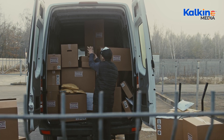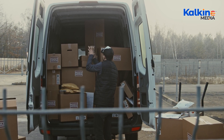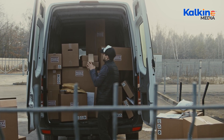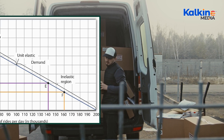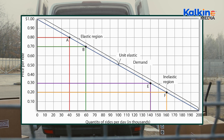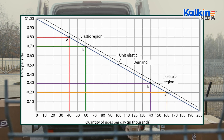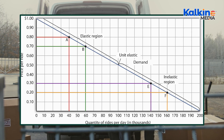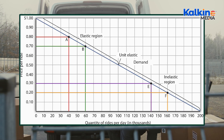The demand curve visually represents the relationship between the price of a good or service and the quantity consumers are willing to purchase. On this curve, the y-axis represents price, while the x-axis represents the quantity demanded.